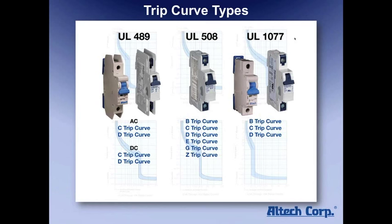Underneath each one you're going to see a different amount of trip curves for each one. We've got two brands that we carry — the Altec and the ABL — giving people two choices of basically a physical look. The trip curves shown here are available in both types.